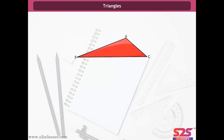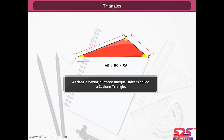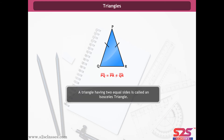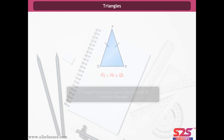Triangles. Let us recall what is a triangle. A triangle is a polygon having three sides, namely AB, BC and CA, and three angles: angle A, angle B and angle C. Triangles can be classified on the basis of sides. Look at triangle ABC — all its sides are unequal. We call such a triangle a scalene triangle. Now look at this triangle: it has two equal sides, PQ equals PR, but it is not equal to QR. So we call this triangle an isosceles triangle.